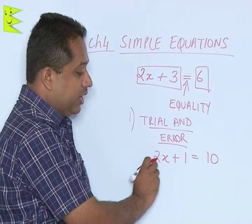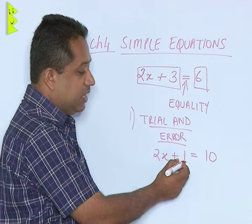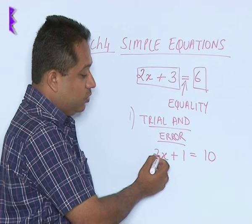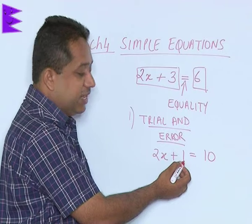Substitute x as 4, we get 2 times 4 is 8, 8 plus 1 is 9. Substitute x as 5, we get x is 5 into 2, so 5 times 2 is 10, 10 plus 1 is 11.